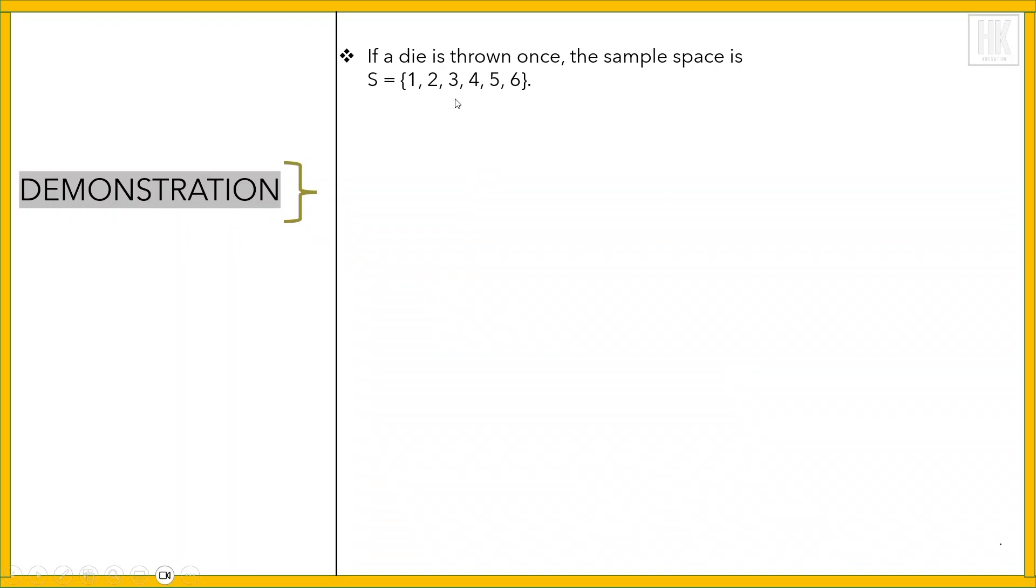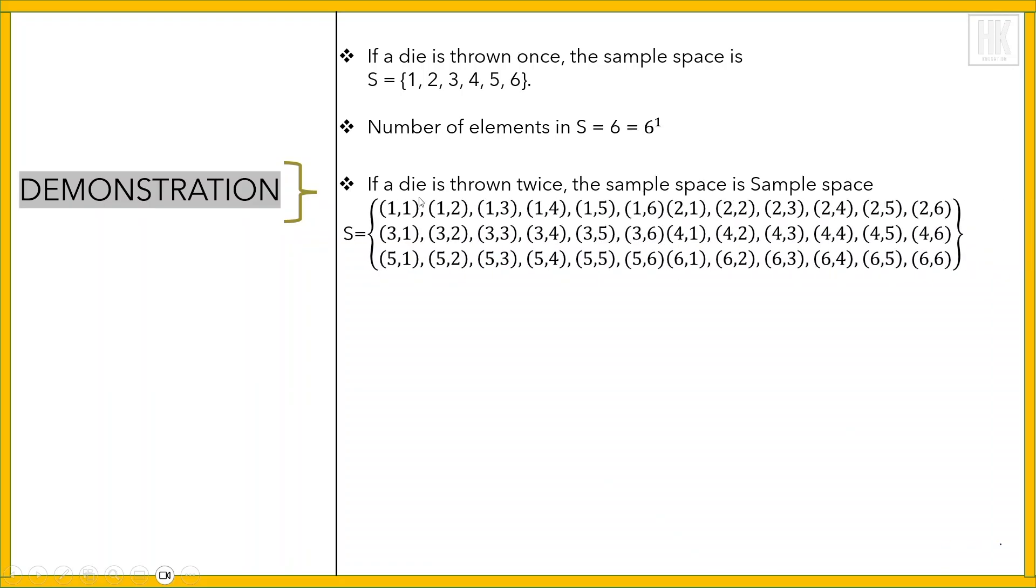We have already written this. The number of elements in the sample space will be 6 raised to the power 1. If the dice is thrown twice, the sample space will be (1,1), (1,2), (1,3), (1,4), (1,5), (1,6), and (2,1), (2,2) through (2,6).